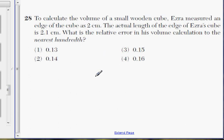Alright, we're almost done with the multiple choice, number 28. To calculate the volume of a small wooden cube, Ezra measured an edge of the cube as 2 cm. The actual length of the edge of Ezra's cube is 2.1 cm. What is the relative error in the volume?